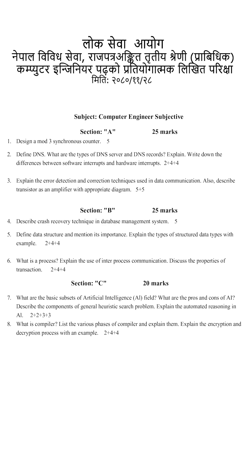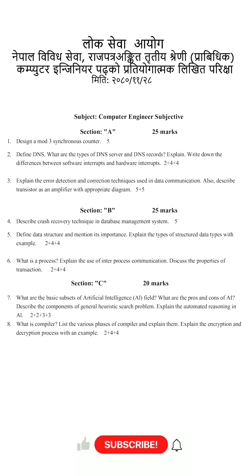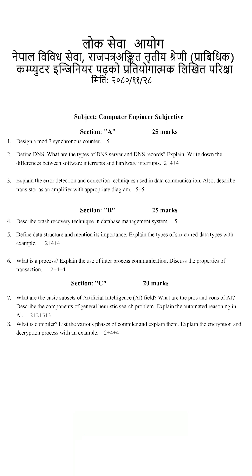Section C of 20 marks. Question 7: What are the basic subsets of Artificial Intelligence? What are the pros and cons of AI? Describe the components of a general heuristic search problem. Explain automated reasoning in AI.